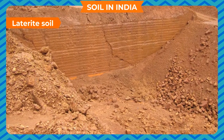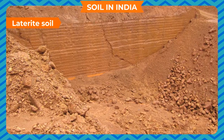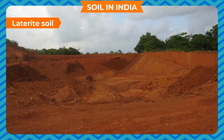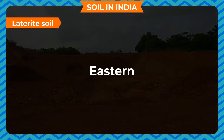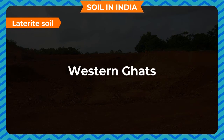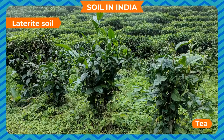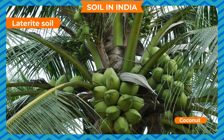Laterite soil is reddish or yellowish in colour and poor in nutrients. It is found in the eastern and western ghats. The soil is good for the growth of tea, coffee, rubber and coconut.